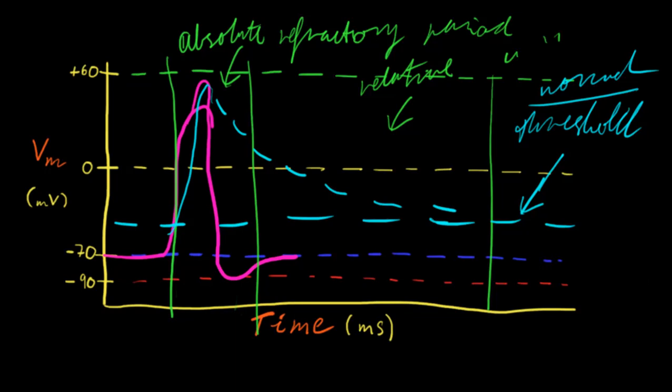And because of that, we see what would otherwise be a normal threshold level down here, we see it gradually come down. And so it actually takes a greater excitatory stimulus to initiate an action potential. So here, although we went over what would otherwise be the normal threshold, we're unable to make an action potential because the potassium ion channels are still trying to recalibrate and get back to normal.